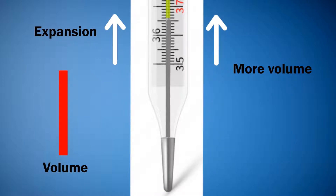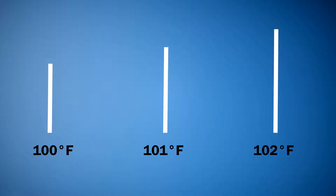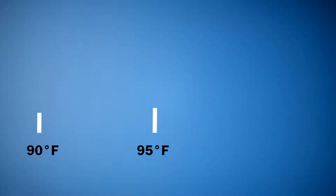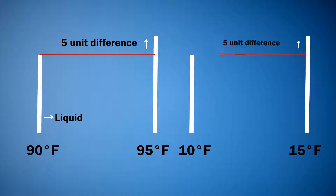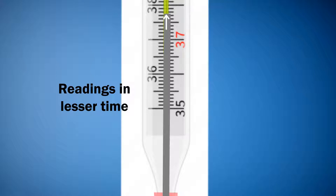An important part of thermometer design is to choose the right liquid. The liquid should expand equally at all temperatures. For example, the liquid should expand by the same amount when temperature changes from 90 to 95 degrees and when it changes from 10 to 15 degrees. The liquid should also be a good conductor of heat so that heat can reach all parts of the liquid very fast, resulting in less wait time to get a correct reading.